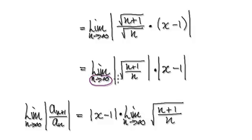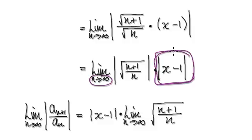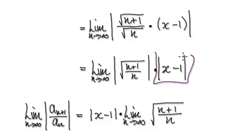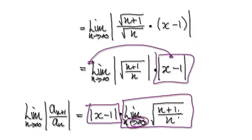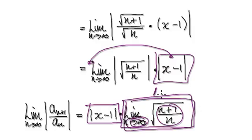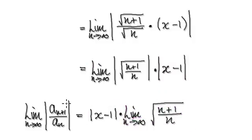Because n is moving towards infinity, this part here doesn't contain n, so you can consider it as a constant and take it outside. The n is what's moving about; this block doesn't contain n, so you can factor it out. As n heads towards infinity, the remaining expression goes to 1, and the square root of 1 is 1, so that whole block equals 1.